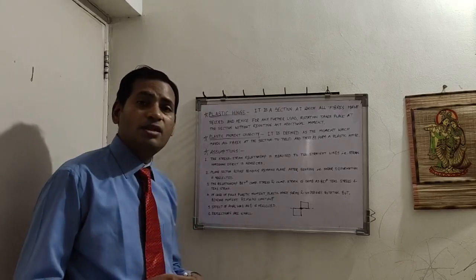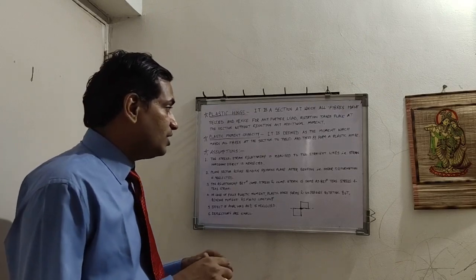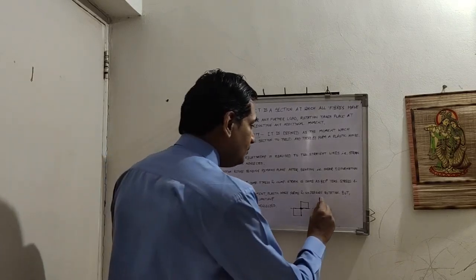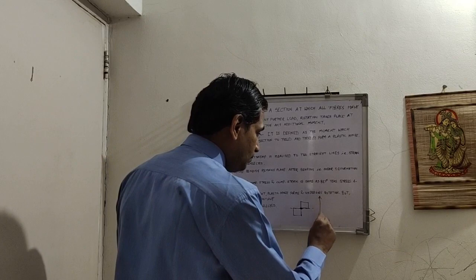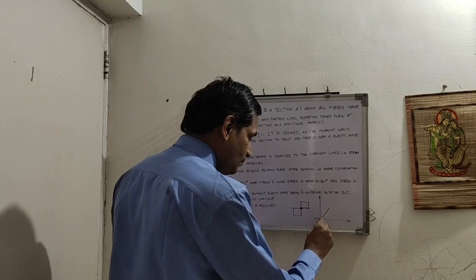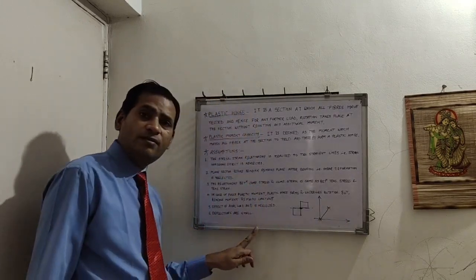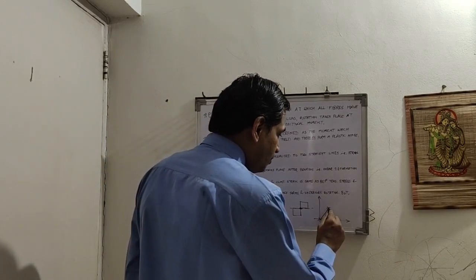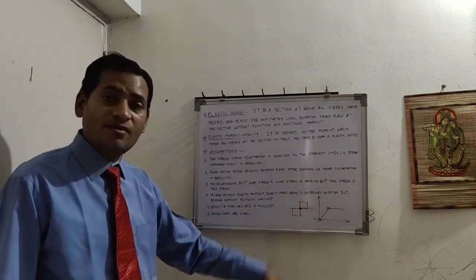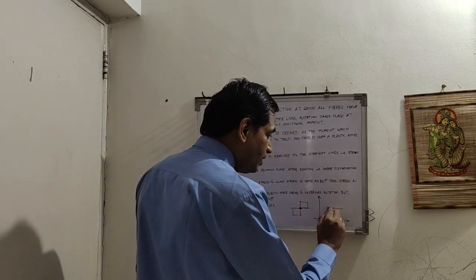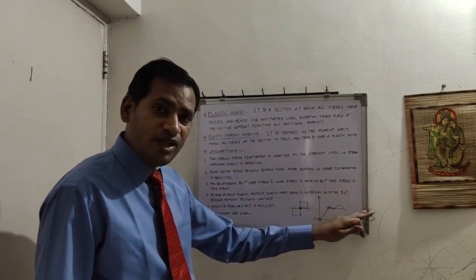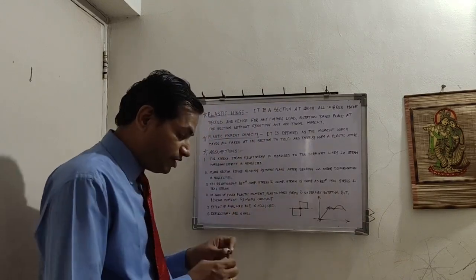There is one additional new assumption: the stress-strain relationship is idealized as two straight lines. In the first session we saw the normal stress-strain behavior of mild steel. That behavior is idealized such that up to the yielding point (point C) it is one straight line, and beyond the lower yield point it is assumed as a horizontal straight line. So these are the two straight lines of the idealized stress-strain curve.